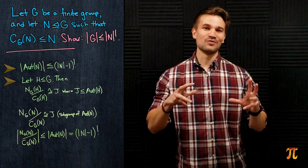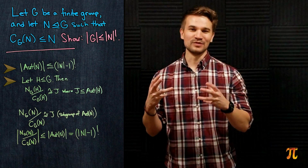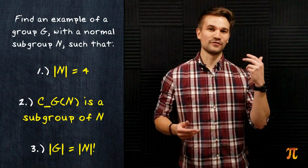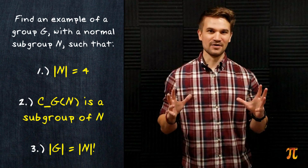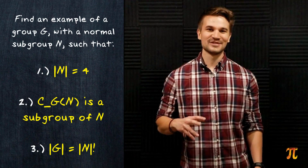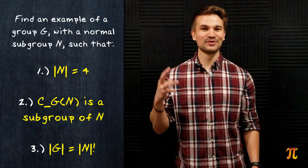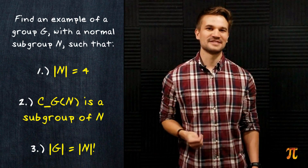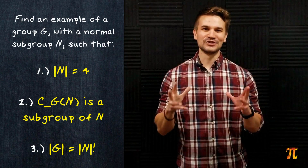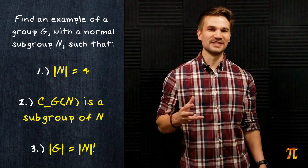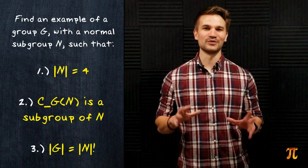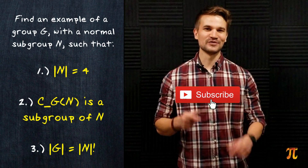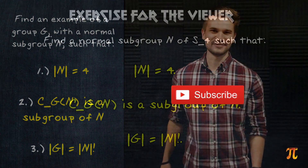This problem actually had a second part: find an example of a group with a normal subgroup N of order 4 where this upper bound is actually met. The group we're looking for is S4, the symmetric group on four elements. I'll leave it to you to find the normal subgroup and verify that the upper bound is met. That's going to do it for this video — see you next time.